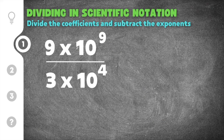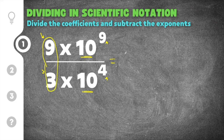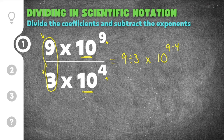This problem gives us 9 times 10 to the 9th divided by 3 times 10 to the 4th. We have our coefficients out front, a base of 10, and exponents 9 and 4. When dividing in scientific notation, we divide the coefficients: 9 divided by 3, times our base of 10. Then for the exponents, we keep the base the same and subtract: 9 minus 4, just like the quotient rule for exponents.